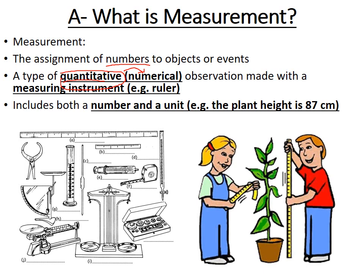Usually we take those measurements using some kind of measurement instrument like a meter stick, a graduated cylinder, a balance, or a simple ruler. Those are all ways in which we can obtain measurements about objects or events. So here we're measuring, for example, the height of the plant, most likely in centimeters.